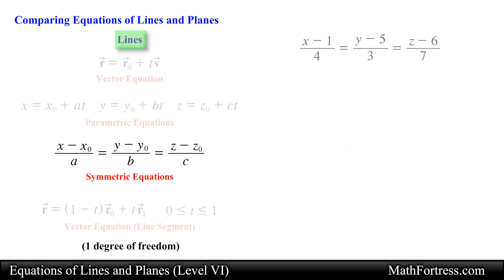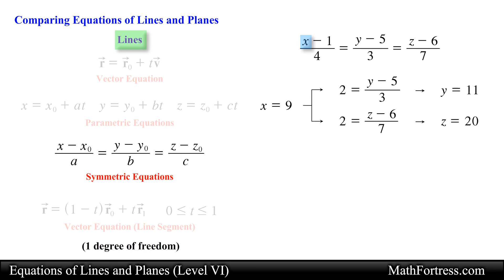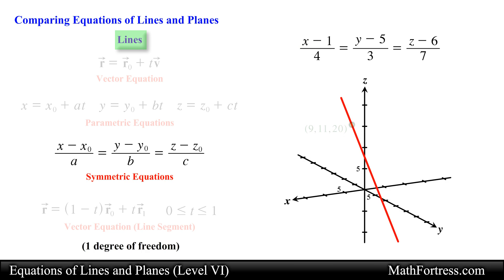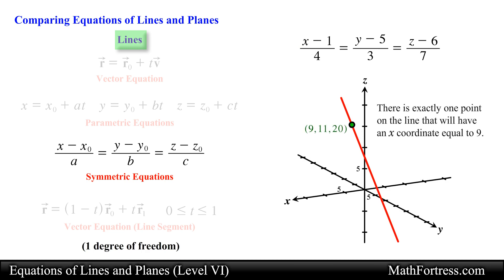For example, in the following symmetric equation of a line, if we let x equal 9 then we can figure out the value for y and z. If you think about this geometrically by visualizing a line cutting through space, notice that there is exactly one point on the line that will have an x coordinate equal to 9. This forces the two other coordinates to attain the following values.